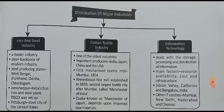Moving on to distribution of major industries — the first and very important one is iron and steel industry, also known as a feeder industry because it is the base of every industry. That is why it is also known as the backbone of modern industry. States producing steel include West Bengal, Jharkhand, Odisha, and Chhattisgarh. Jamshedpur is where India's first iron and steel plant was set up in 1907, named TISCO — Tata Iron and Steel Corporation. Pittsburgh is the steel city of the United States.